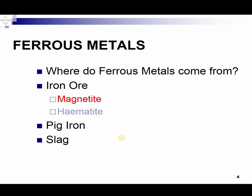Before going on to ferrous metals, we must understand that ferrous metals are those metals where iron is the principal constituent. So we must have a good knowledge about where iron ore comes from. Iron ore comes from magnetite and hematite — these two ores are used to produce iron.